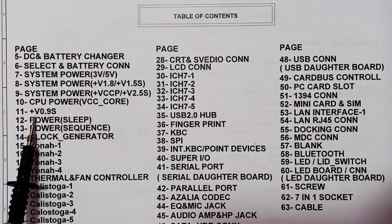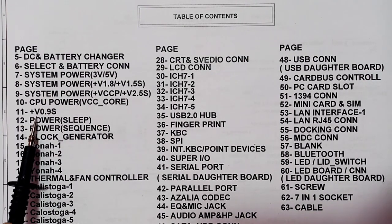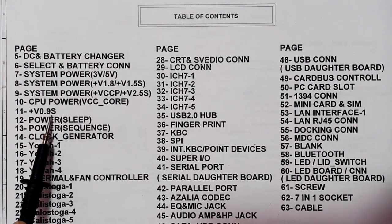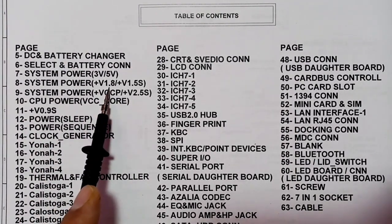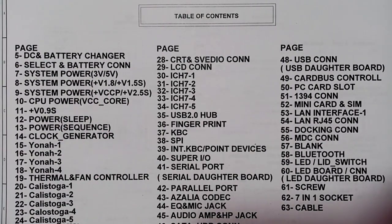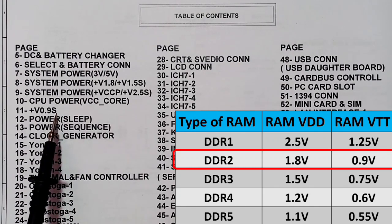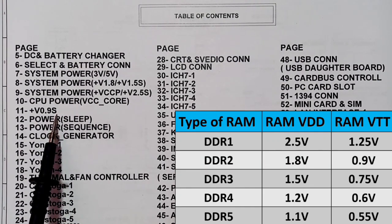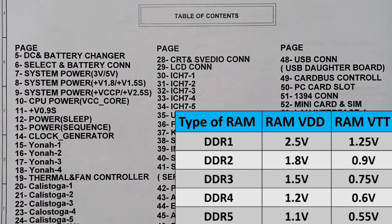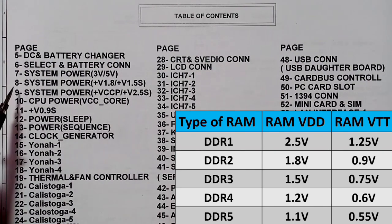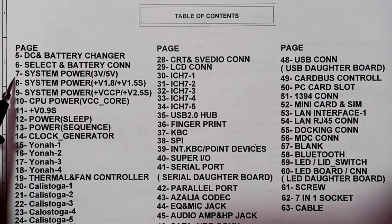We also have 0.9 volt, which is the RAM VTT — the power for RAM terminals. This is half of 1.8 volt. The RAM has two voltages: for DDR2, the main voltage is 1.8 volt and the VTT is 0.9 volt. For DDR3, the main voltage is 1.5 volt and the VTT is 0.75 volt.